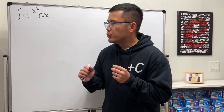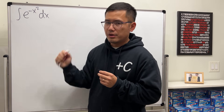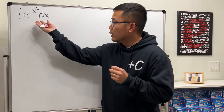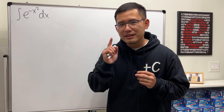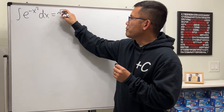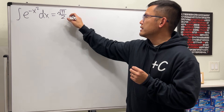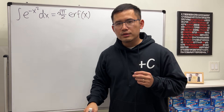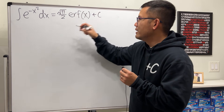You've been wondering how to integrate e to the negative x squared when there are no bounds — that's a Gaussian integral without negative infinity and positive infinity. Can we still do this? Not with regular functions, but yes with a special function. We can answer this as square root of pi over 2 times the error function erf(x), and don't forget the plus c.